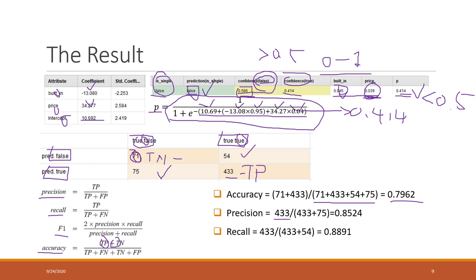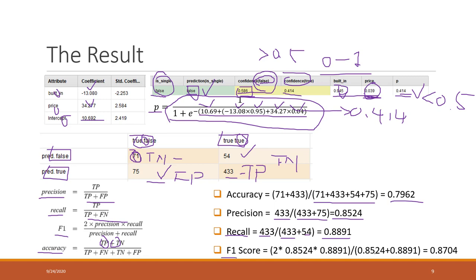Precision is true positive divided by true positive plus false positive. Recall is true positive divided by true positive plus false negative. Finally, F1 score is a combination of precision and recall. So the overall accuracy of this model is about 0.8 — not bad — and that is accuracy on the training data.